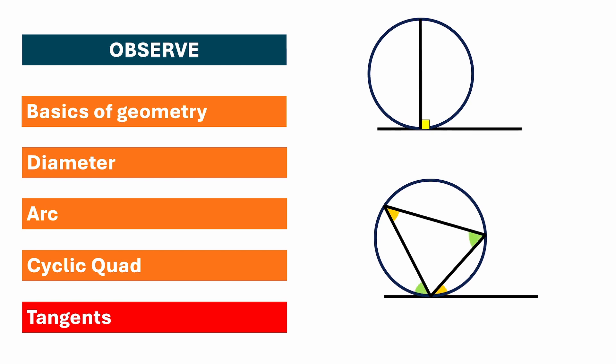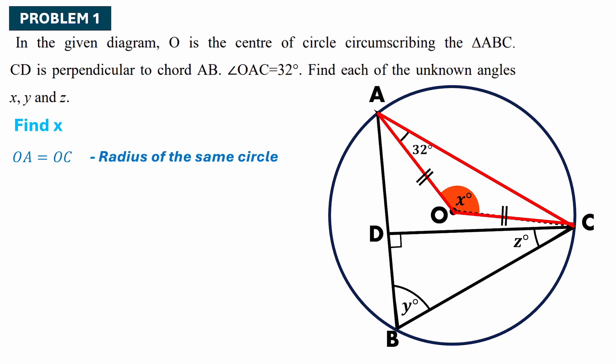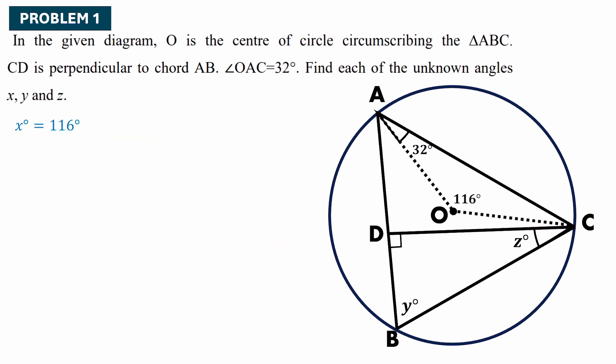Now let's solve some problems. In problem one, O is the center of the circle circumscribing triangle ABC, CD is perpendicular to chord AB, and angle OAC is 32 degrees. Find angles X, Y and Z. For X: OA equals OC (radii of the same circle), so angle OAC equals angle OCA equals 32 degrees by the isosceles triangle property. Therefore X equals 180 minus (32 plus 32) equals 116 degrees. For Y: arc AC subtends angle AOC (which is X = 116°) at the center and angle ABC at the circumference, so Y equals 116 divided by 2 equals 58 degrees.